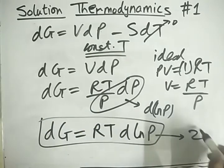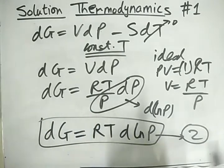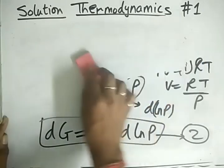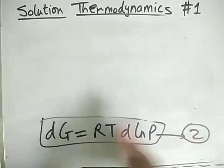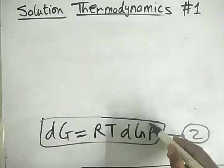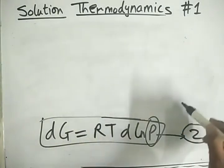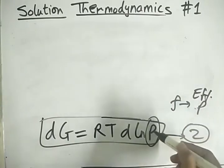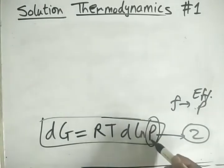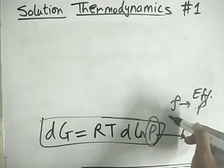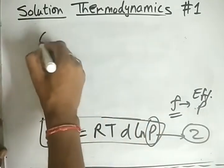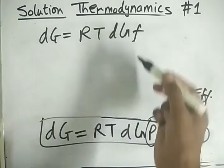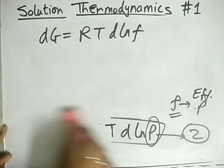Remember this second formula because it is very important. Now for an ideal gas we have dG = RT·d(ln P). For a real gas, P is replaced by fugacity F, so we can also write dG = RT·d(ln F). This is also a most important formula. We now have two key formulas: dG = V·dP − S·dT and dG = RT·d(ln F).